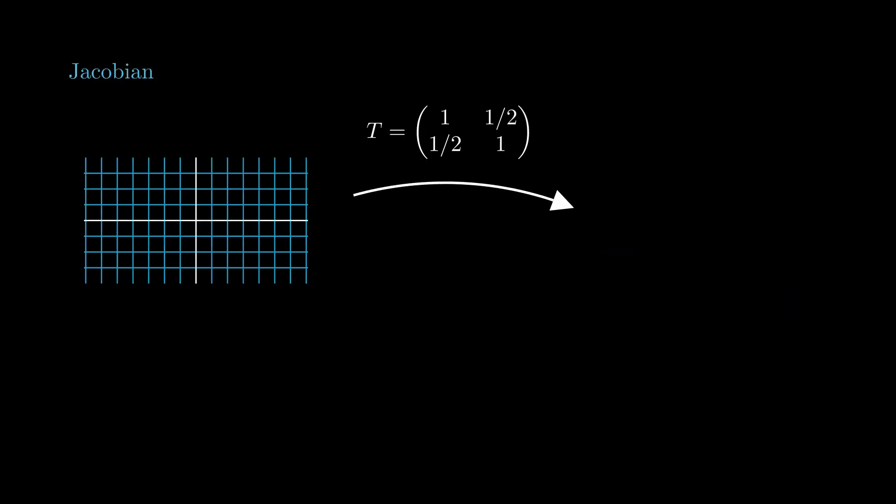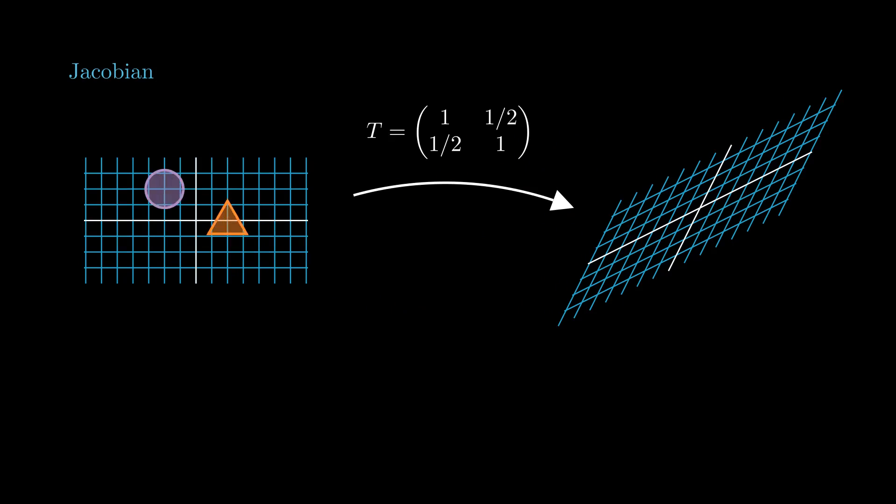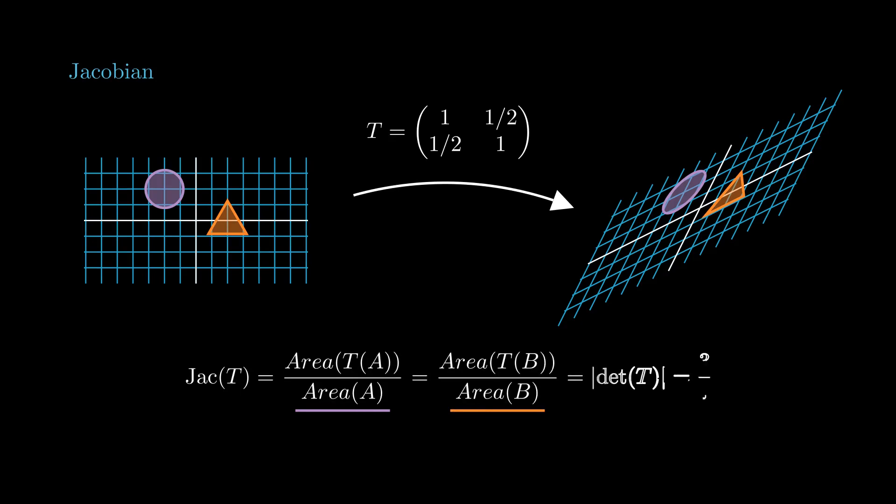Now, given a linear function between vector spaces, we can quantify how much it distorts the area. This is given by the Jacobian, which, if the domain and codomain have the same dimension, coincides with the absolute value of the determinant.